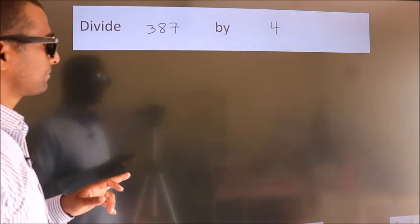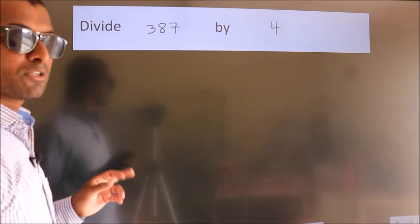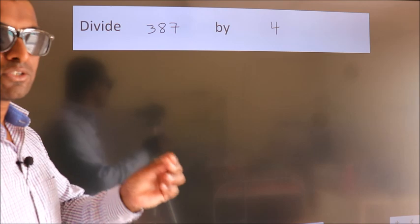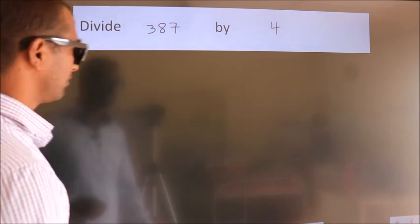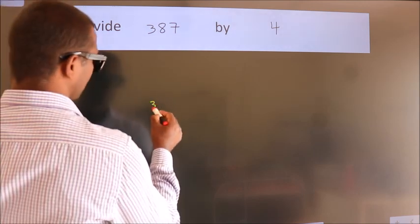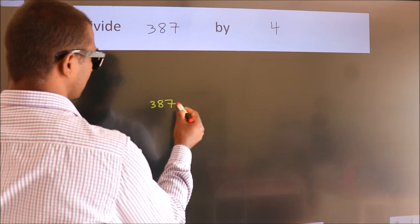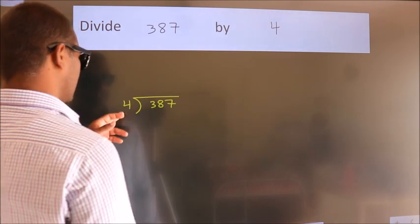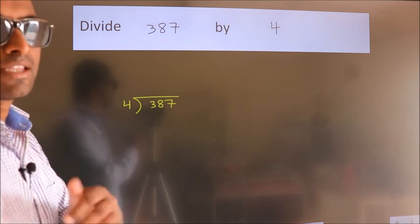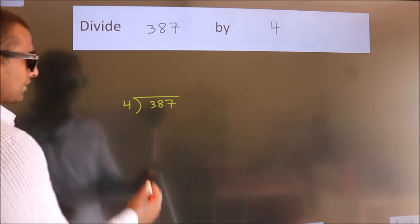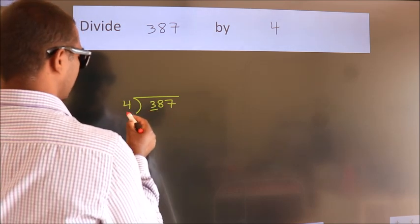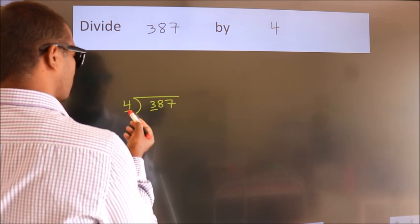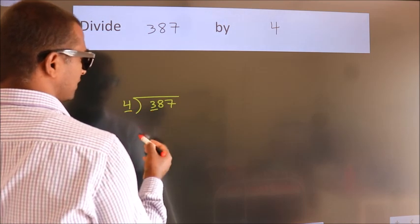Divide 387 by 4. To do this division we should frame it in this way: 387 here, 4 here. This is your step 1. Next here we have 3, here 4. 3 is smaller than 4, so we should take two numbers.